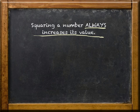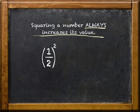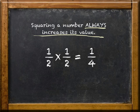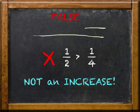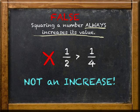But look what happens when we use one-half. If you square one-half, that means one-half times one-half, you get one-fourth. Which is less than the one-half you started with. So, since we've now found one counter-example, that means we've disproved the statement. It's not true. Got it?